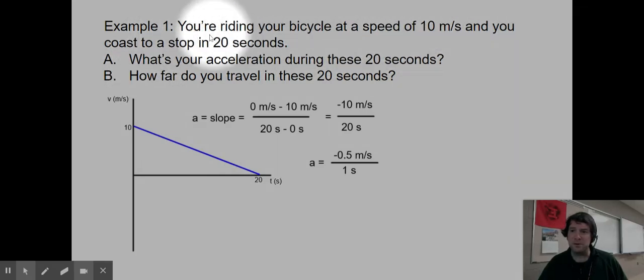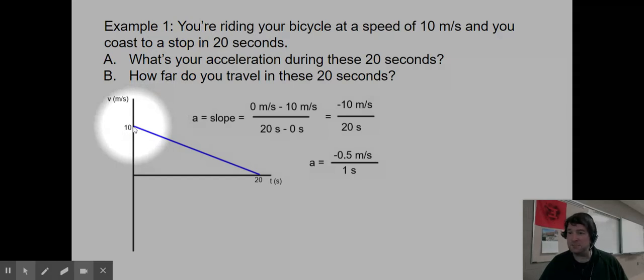I know that I'm at zero meters per second. It wasn't written out as a number there, but coast to a stop. And when I'm stopped, I have a velocity of zero meters per second. So my graph slopes steadily down from 10 meters per second at zero seconds to zero meters per second at 20 seconds.